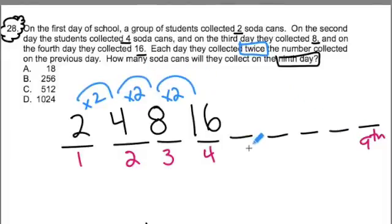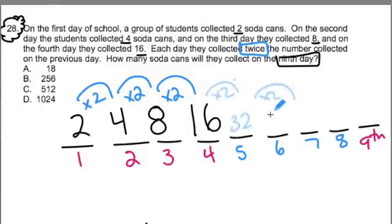So if I want to find the ninth term, I'm going to figure out what the fifth term is, the 6th, 7th, 8th, and 9th. So if I continue this pattern, I double it again, I'm going to get 32. Double it again, get 64.